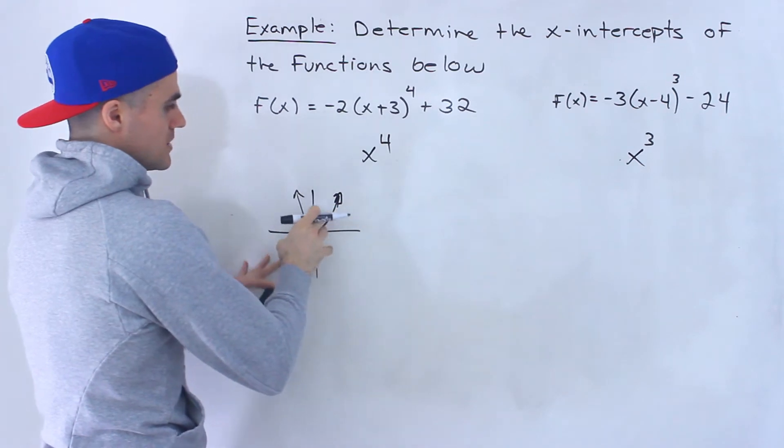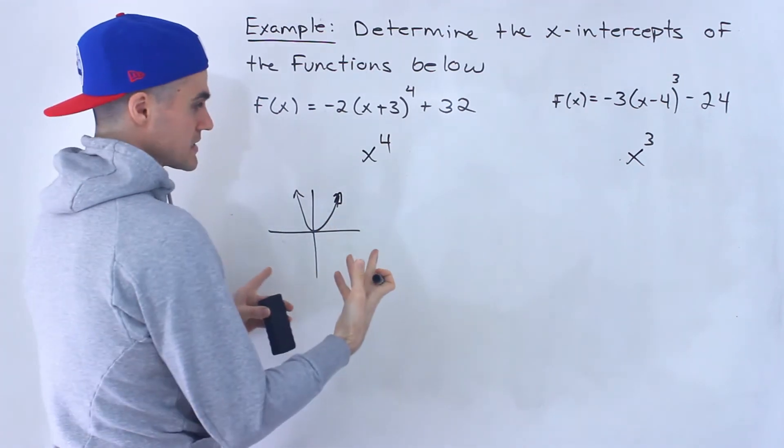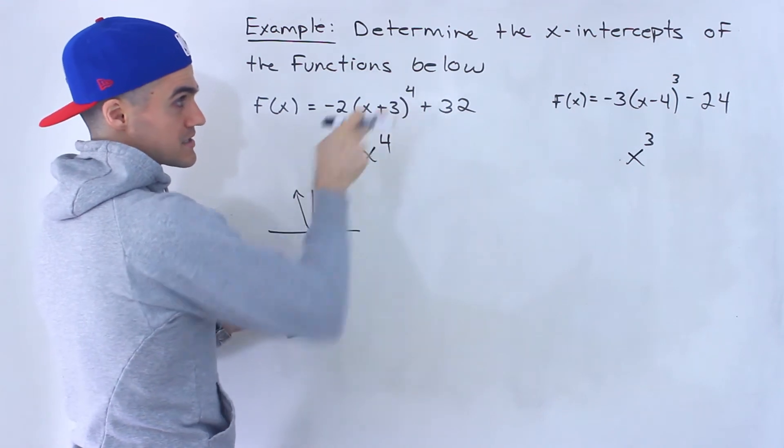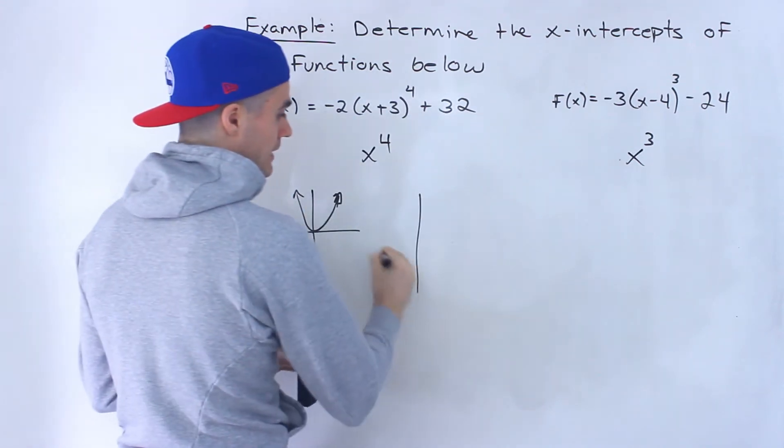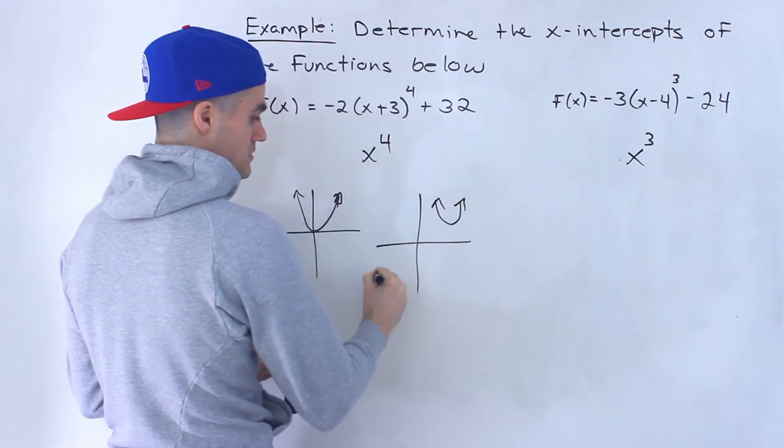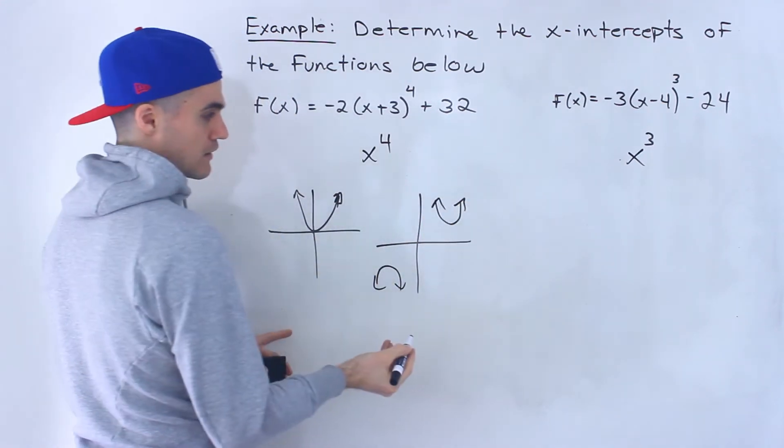And so depending on the transformations, there's basically going to be one of three cases for the x-intercepts. We can get a case where there's no x-intercepts. So if it looks like that, for example, we can get the case of one x-intercept.